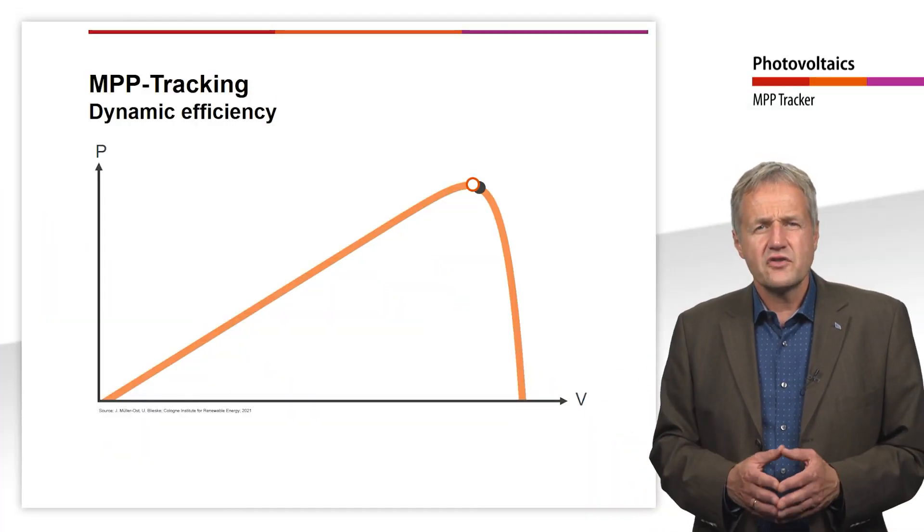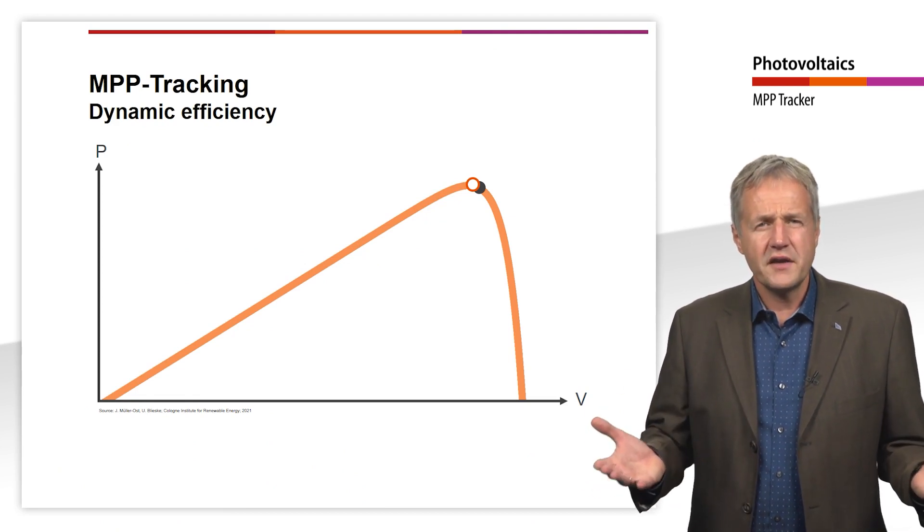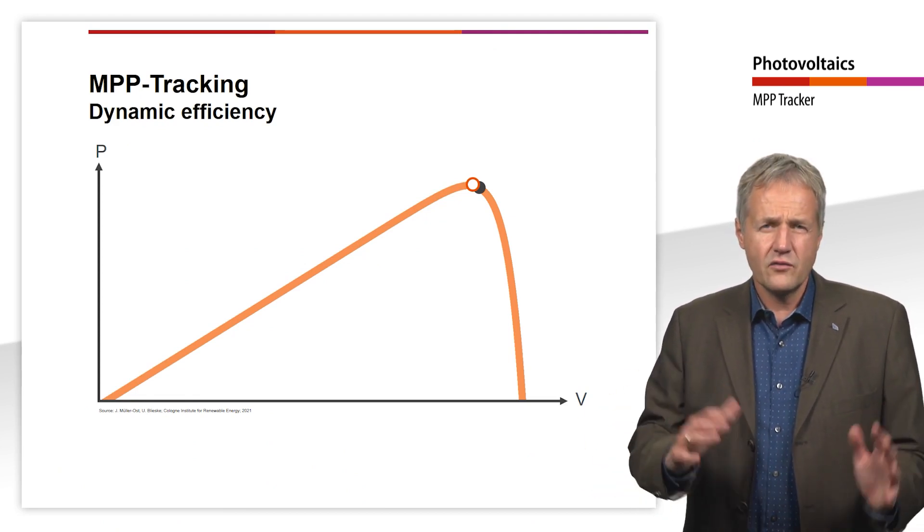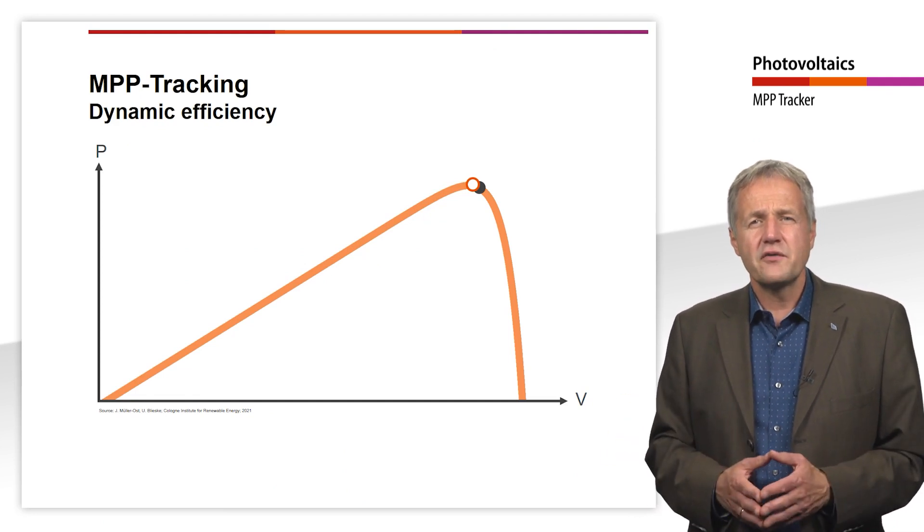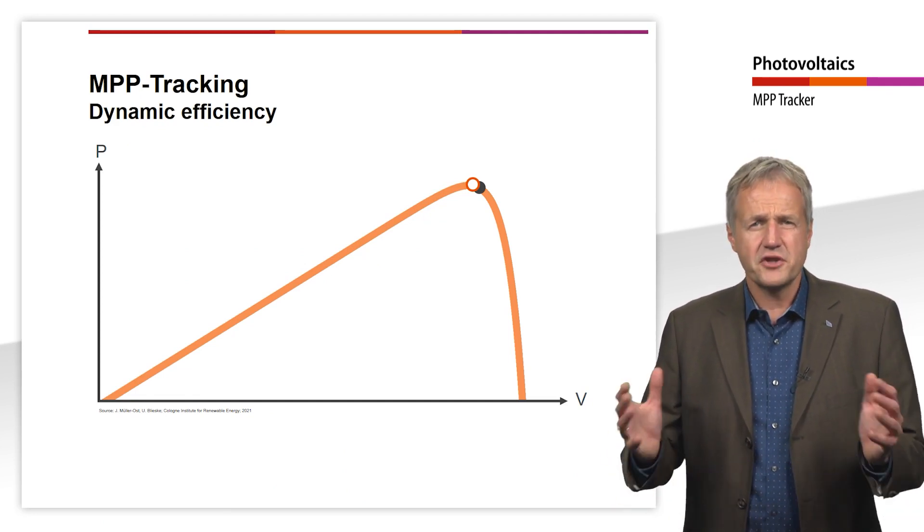If the ambient conditions remain the same, the losses caused by the MPP tracker are therefore less than 1%. But what happens if the irradiation or the temperature change?